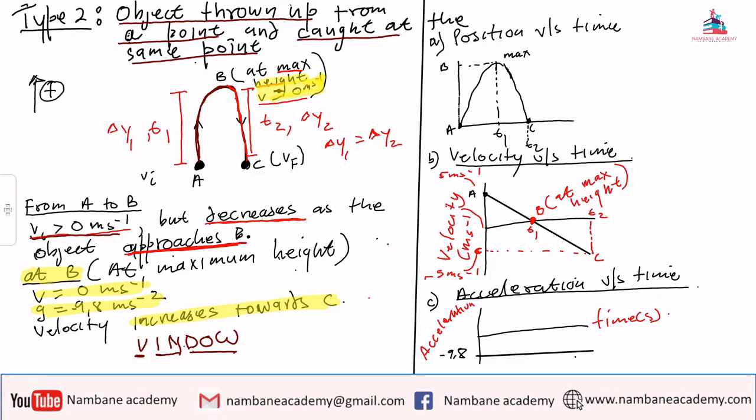We are expected to draw position versus time. For position versus time, it will start at point A, reach a maximum point of B, and fall back to point C where it started, and it will reach maximum height at a certain specific time.